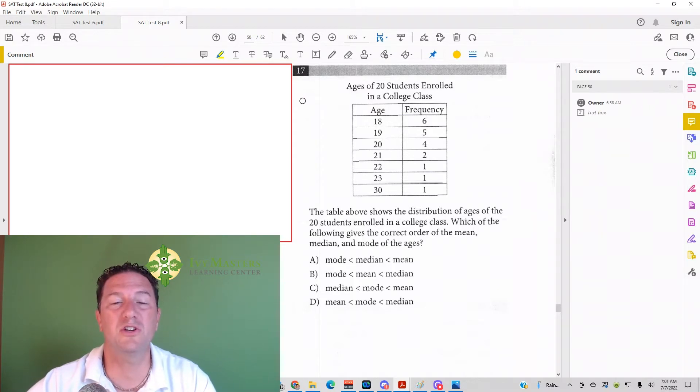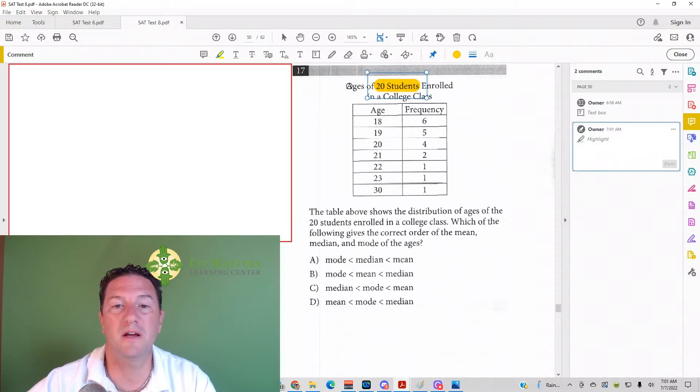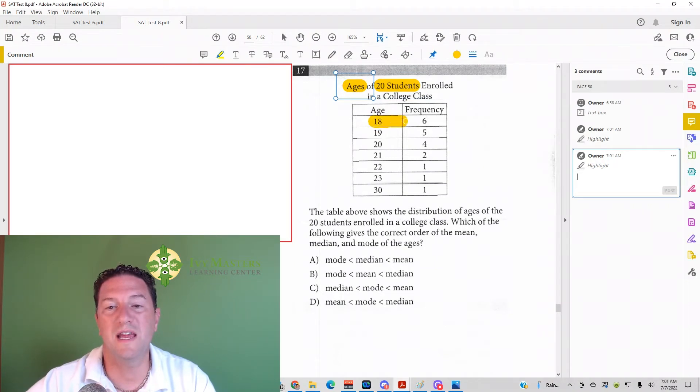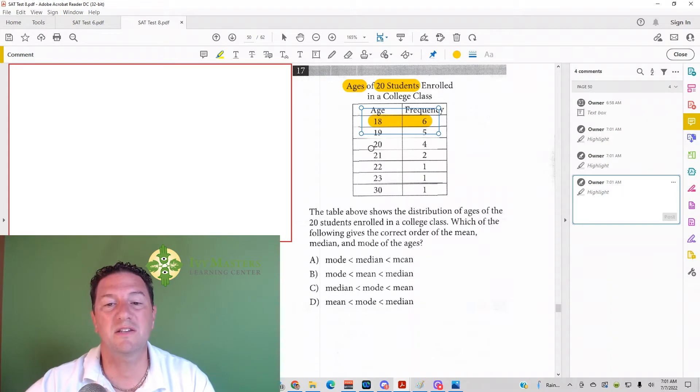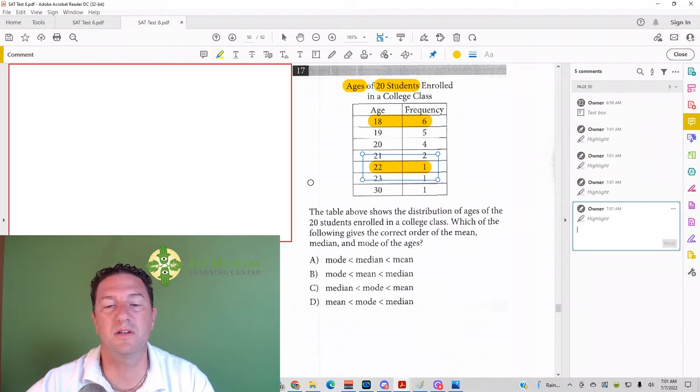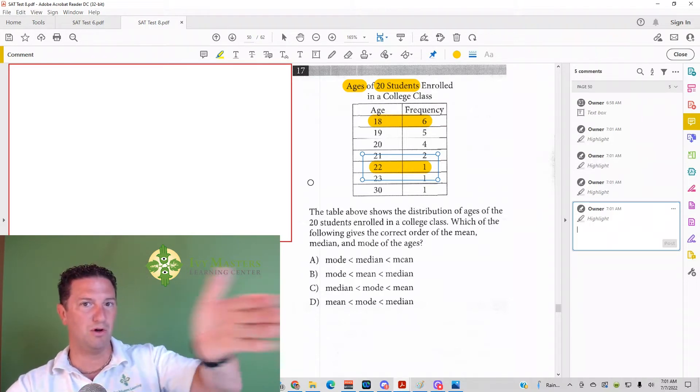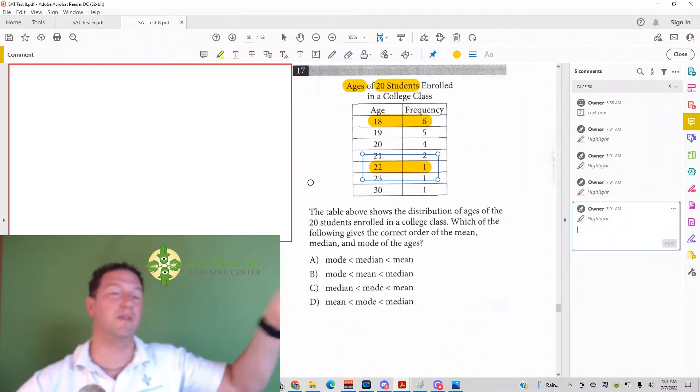Before you go reading a question, you want to understand what's going on at a table. So up top we read the ages of 20 students enrolled in a college class. And then we look, what's 18 and frequency 6 mean? It actually means that 6 students are 18 years old.